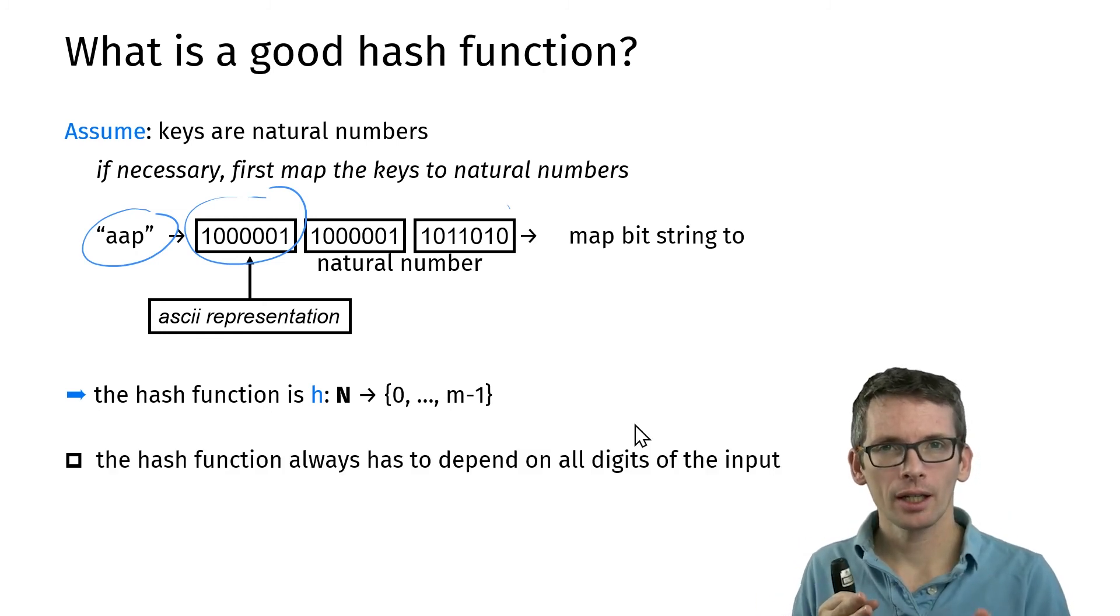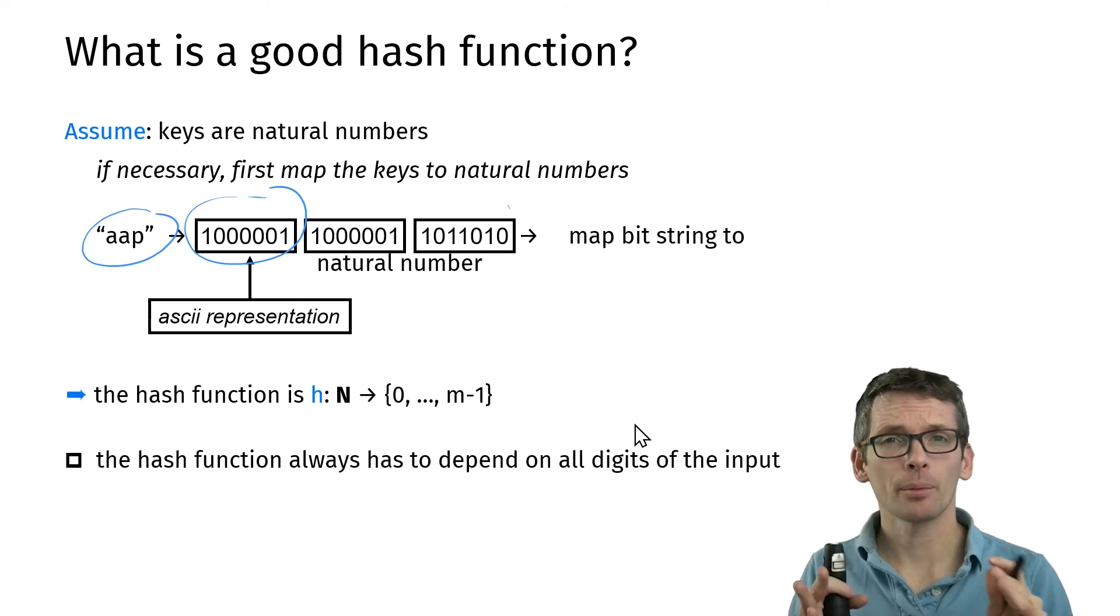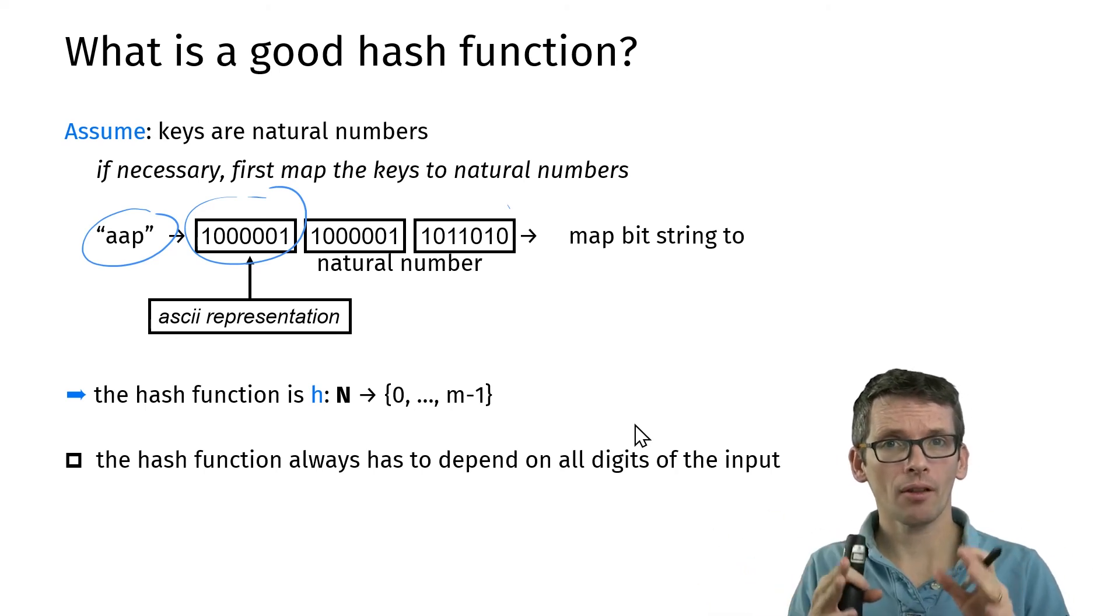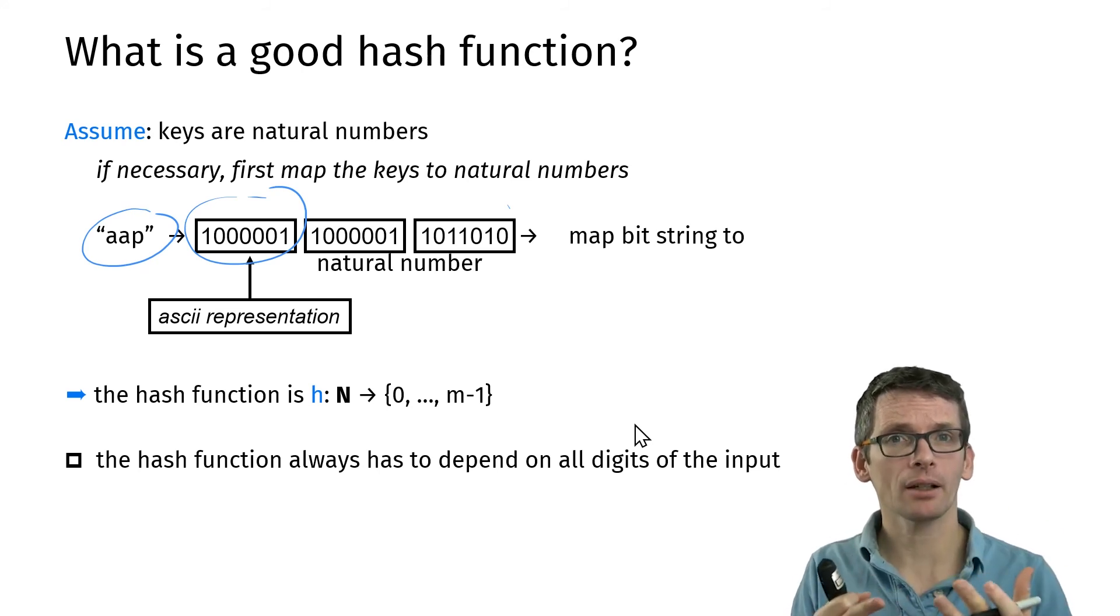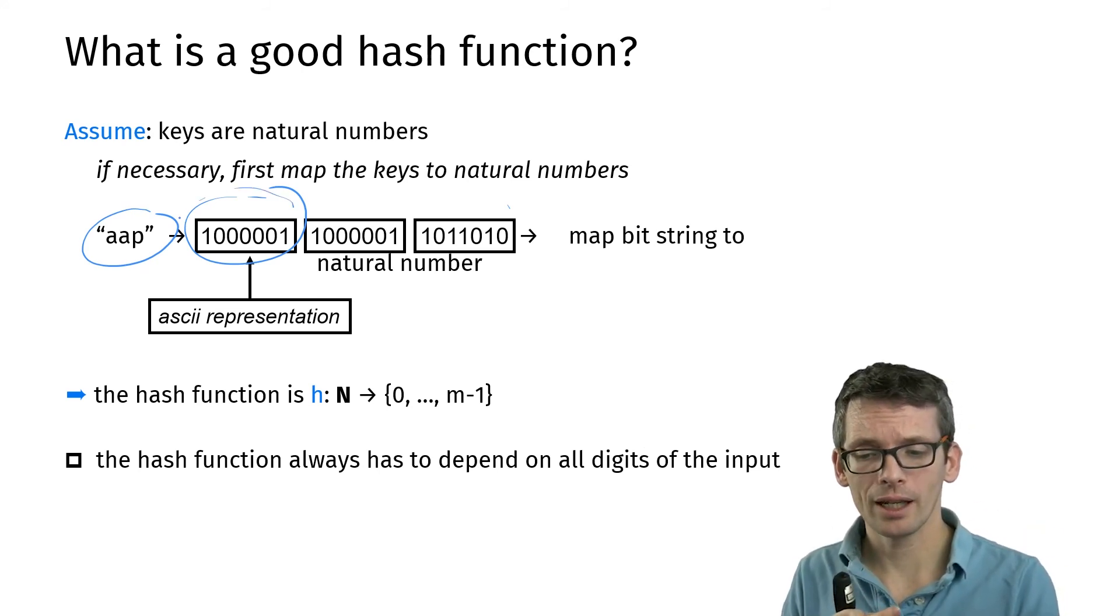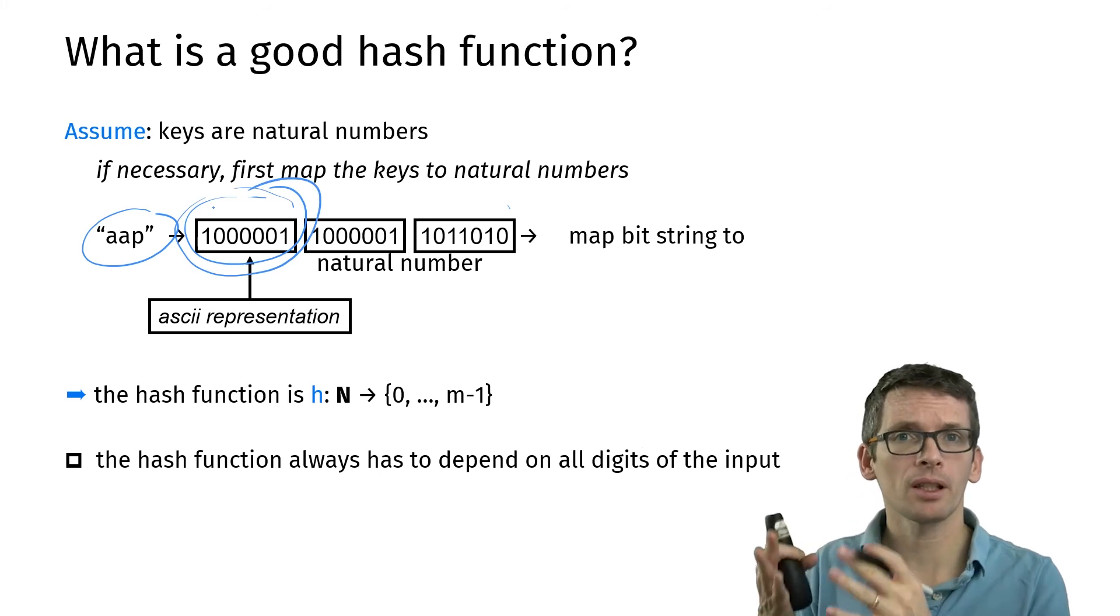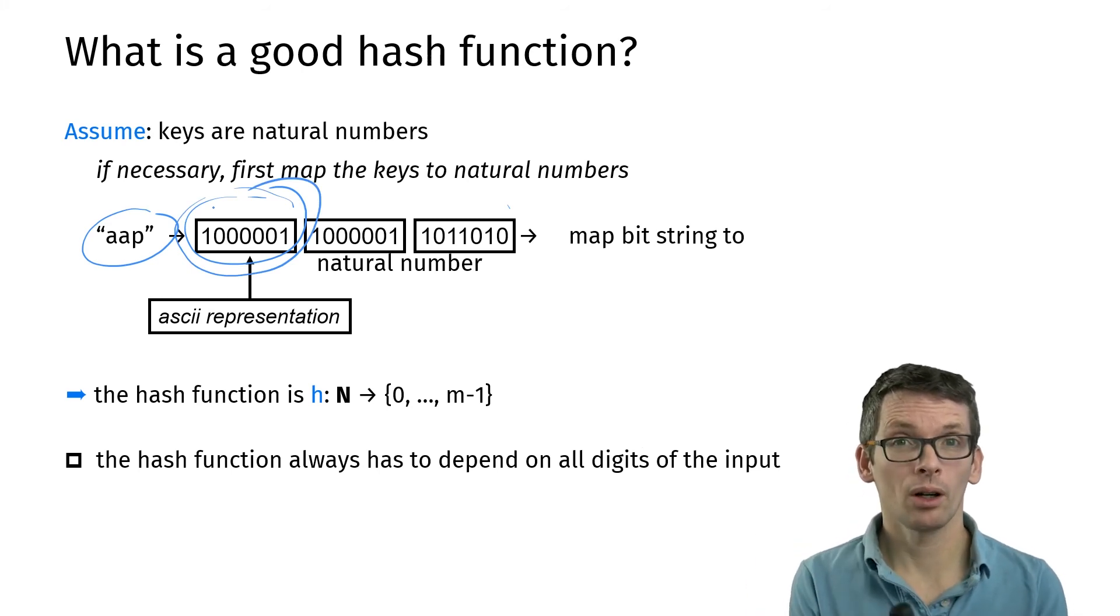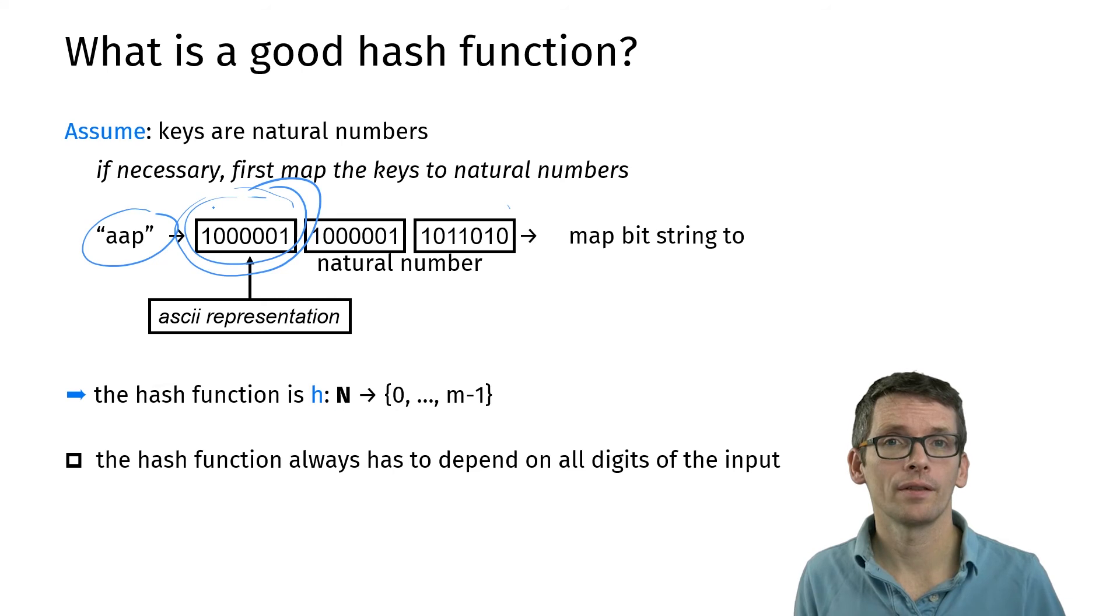This allows us to from now on think about hash functions that map natural numbers to positions in my hash table. A first observation here is that we want to have a hash function that depends on all digits, all bits of the input. Because otherwise it's very easy to pick up patterns that are in the data. Here, for instance, you could easily just pick up a specific letter if you ignore parts of the input.